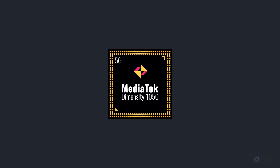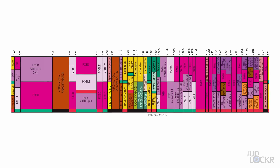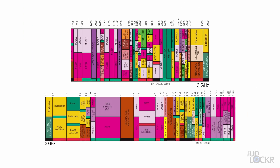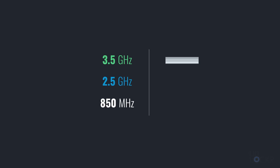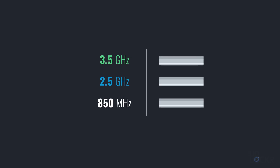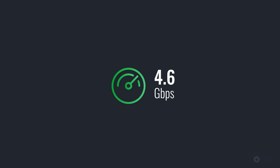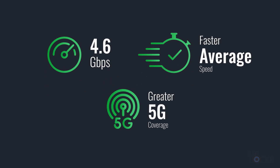The new MediaTek Dimensity 1050 can not only utilize the new C-band frequencies, but in places where there is only sub-6, it uses what's called 3CC, or Three Carrier Component Aggregation, to combine three different frequencies of 5G and LTE and treat it as one large pipe, enabling a peak download speed of up to 4.6 gigabits per second, plus faster average speeds and greater 5G coverage.